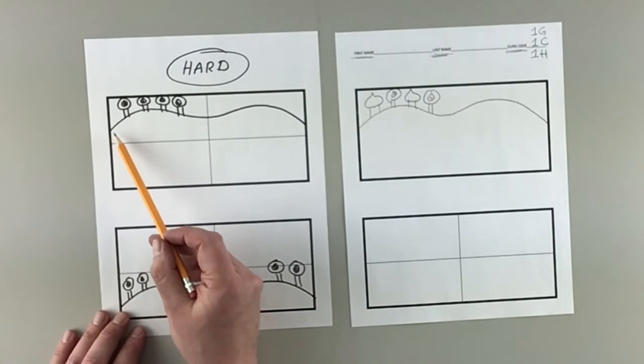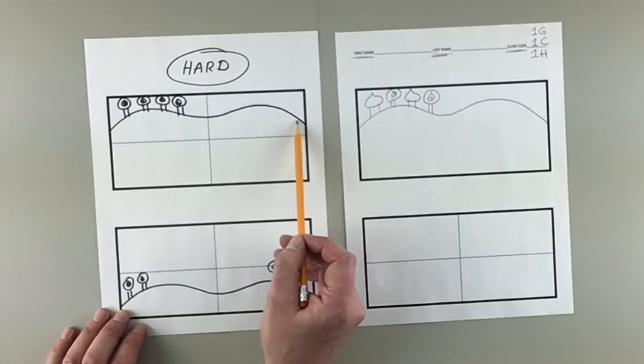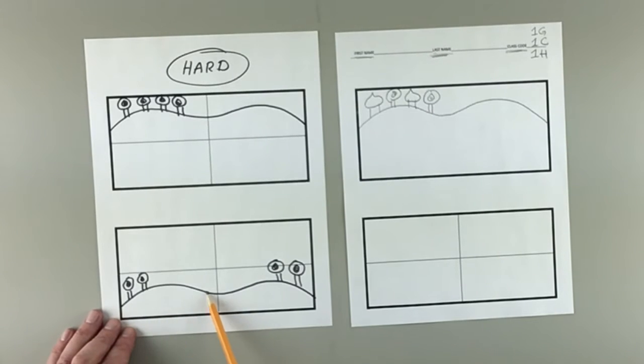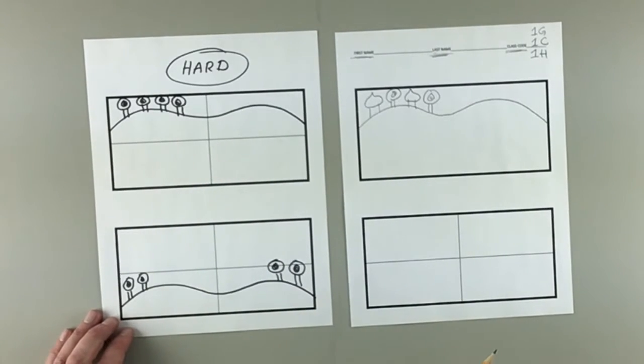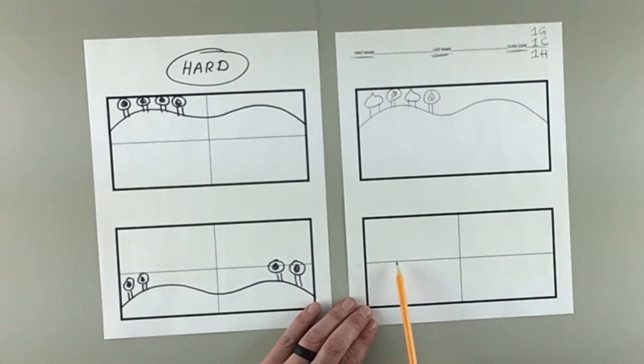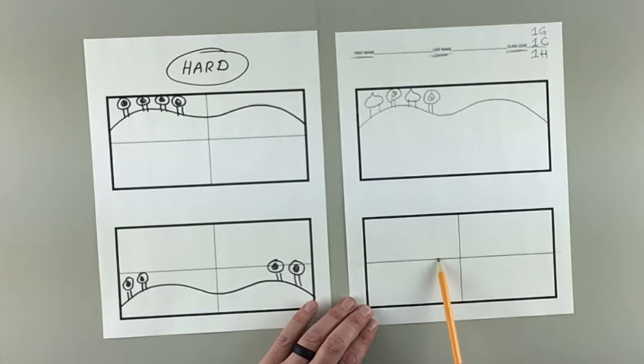To start off, we want to make sure that our horizon line is not too high, and we want to make sure that it is not too low, so that we don't have too much sky or too much land.